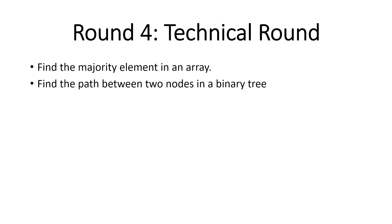The first question was the majority element — a number that appears more than n/2 times in an array. They need a solution with a specific time complexity. The algorithm they were looking for is Boyer-Moore Voting Algorithm, available on LeetCode. If you could do that, great; if not, you lost that question.